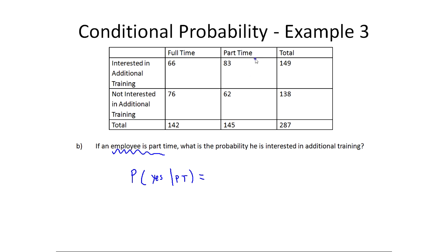So just as before, I want to focus in on part-time. And I want to say, okay, that's going to be out of 145 because there's 145 employees that are part-time. How many of them were interested in additional training? It would be 83. And so again, once you know, to get a final answer here, I'd write it either as a percentage or a decimal most likely.